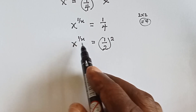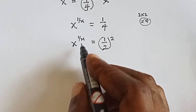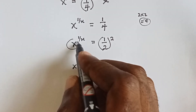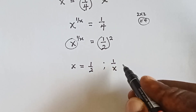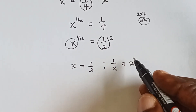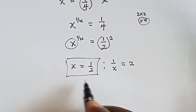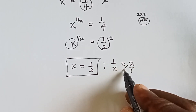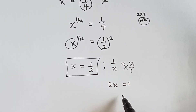From here, we can equate both the powers and the bases. If we equate the base, x equals to 1 over 2 — that is this base and this 1 over 2. And then we can also say that the power 1 over x equals to 2. So, 1 over x equals to 2. Cross-multiplying, we have 2x equals to 1, and that means x equals to 1 over 2.